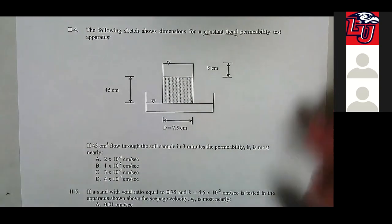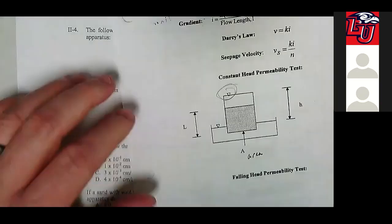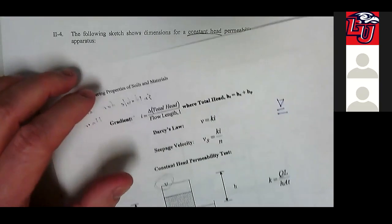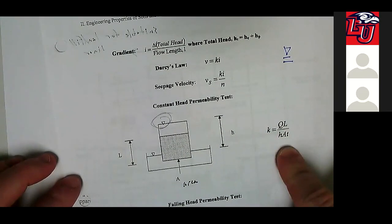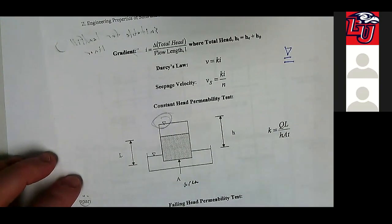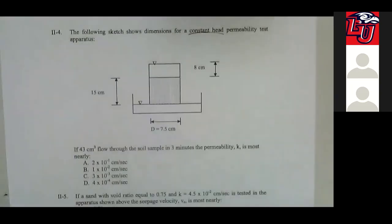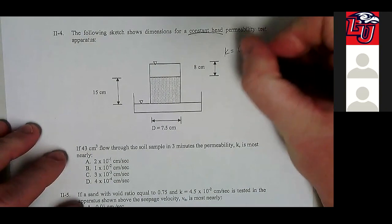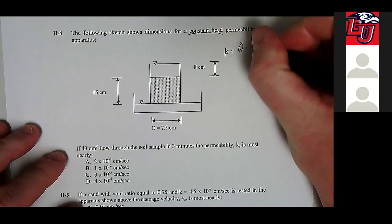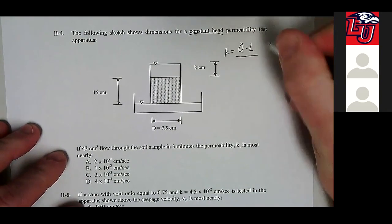Remember, flag these equations and highlight the ones you're going to need. This is what we need: K is equal to QL divided by HAT. That's our equation for permeability for a constant head permeability test. So K is equal to Q times L divided by H times A times T, where T is time.